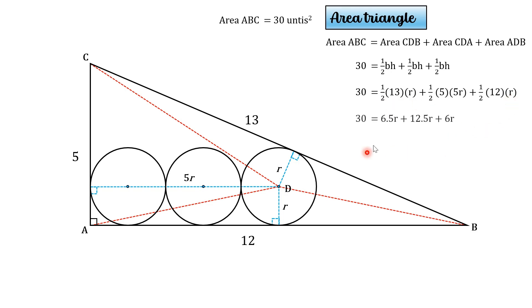A half times 13 is 6.5. 5 times 5 is 25 times a half is 12 and a half. 12 times a half is 6, and because there's like terms, we can add them. So that gives us 25R, and then to find R we divide by 25 both sides, so the radius is 1.2.